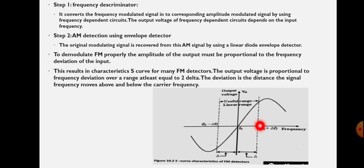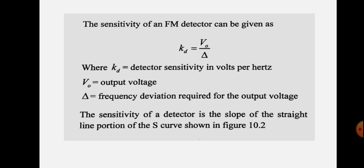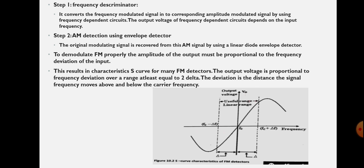You can see here that Δ is marked on the curve, and at that point the output curve is linear — meaning output voltage is proportional to the input frequency. Similarly, in the negative frequency deviation region, the output is also proportional to the input frequency. This linear portion must span at least a 2Δ region for proper FM demodulation. The curve has an S-shape, which is why it is called the characteristic S curve for the FM detector. The sensitivity of the FM detector is given as kd = V0 / Δ, where kd is the detector sensitivity in volts per hertz, V0 is the output voltage, and Δ is the frequency deviation. The sensitivity is the slope of the straight-line portion of the S curve.